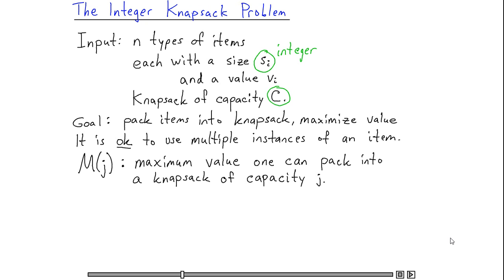Our algorithm is going to compute these values in sequence from the bottom up. In other words, it's going to compute M(1), M(2), and so on until eventually it computes the optimal value one can pack into a capacity C knapsack. And at every step, it's going to compute a new value of M(j) based on the previous values of M(1) through j minus 1 that we've already computed.